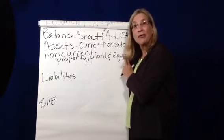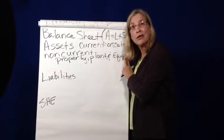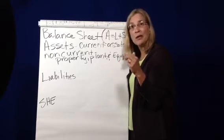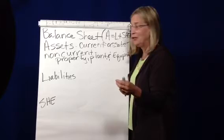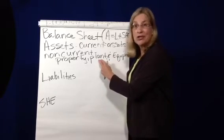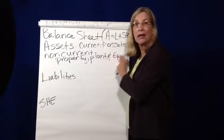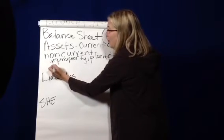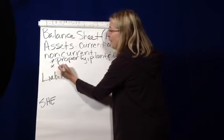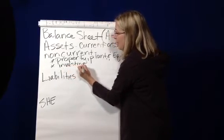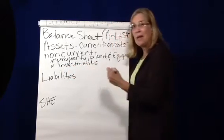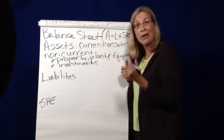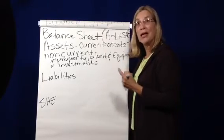There's also another account here called accumulated depreciation. Accumulated depreciation is the accumulated or past usage of your machinery and equipment, your plant, and your equipment. In addition to property, plant, and equipment, we also have investments — long-term investments made in the business where we're holding onto the asset because we think it's going to appreciate in value.